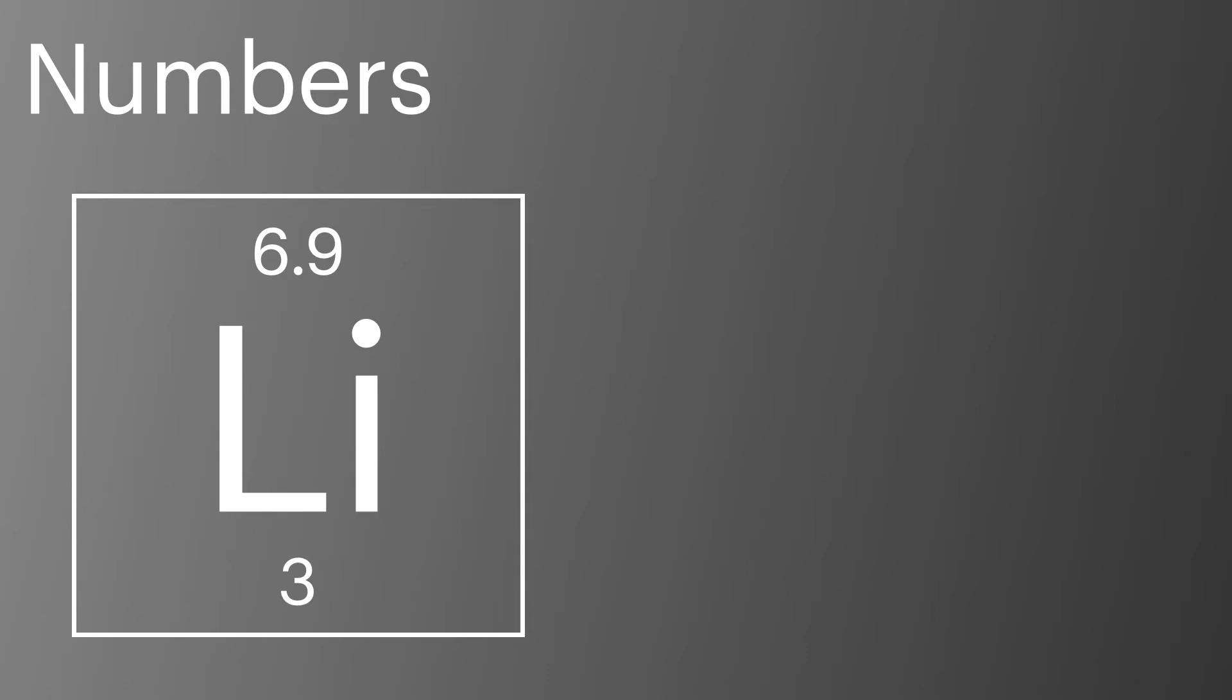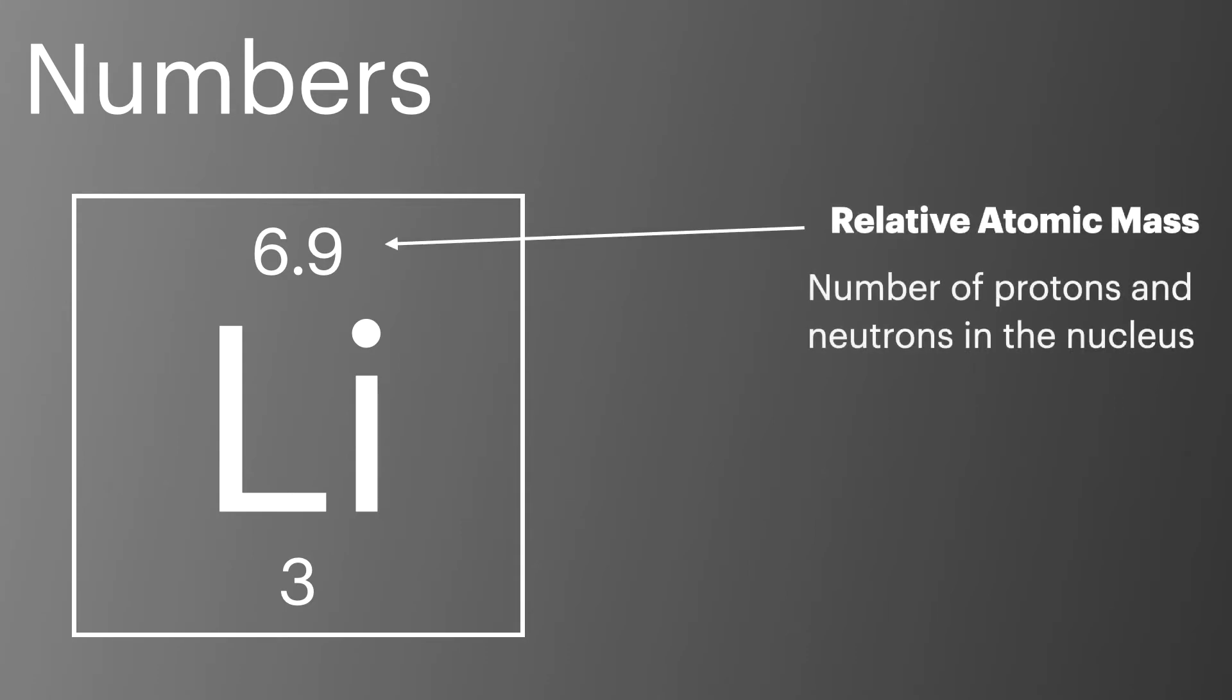There are two main pieces of information inside each square on the periodic table. The relative atomic mass is the mass of the protons and the neutrons added together. This mass is an average of the isotopes present for the element on earth and the measurement is taken relative to the mass of a carbon-12 atom.